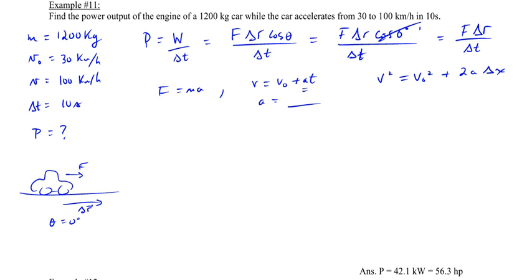So if you do that, you get about 8.3 repeating meters per second for 30 kilometers per hour and 27.7 repeating meters per second. And so when you plug that into here, you'll get an acceleration of 1.94 meters per second squared.